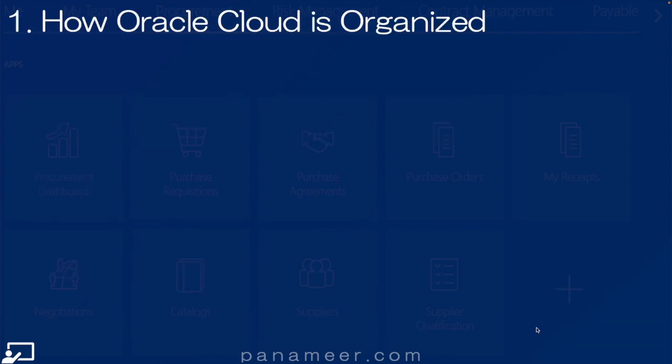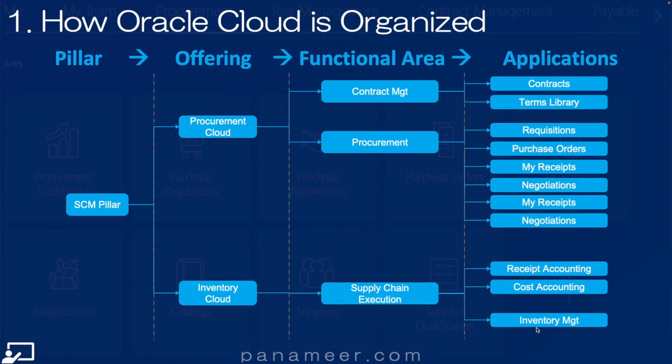Slide one. This is a recap of how Oracle Cloud is organized — from pillar to sales offering, functional area to application. Here's an example of how all these terms relate. Click the link above to watch a quick video explaining how Oracle Cloud organizes all of its applications.